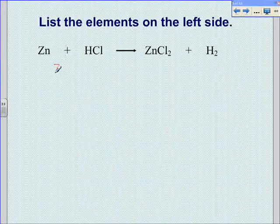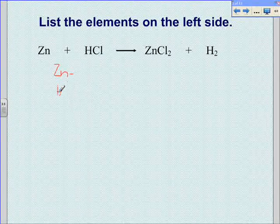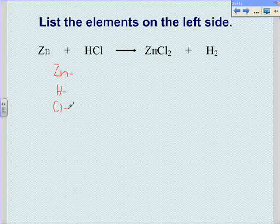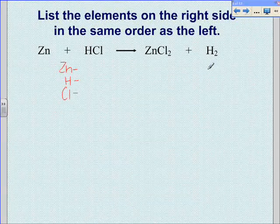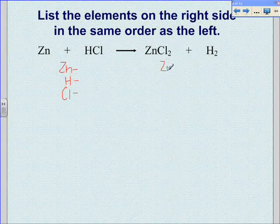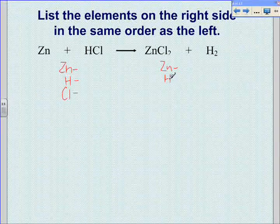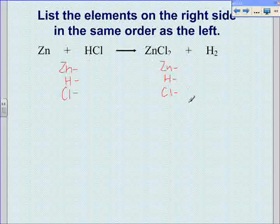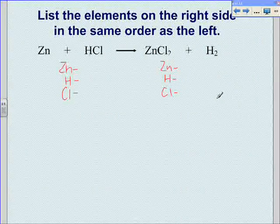This equation has zinc on the left side, hydrogen, and chlorine. Then, list the elements on the right side in the same order as the left: zinc, hydrogen, and chlorine. Notice that I wrote the elements in the same order as my list on the left side, not the order that they appear in the equation.